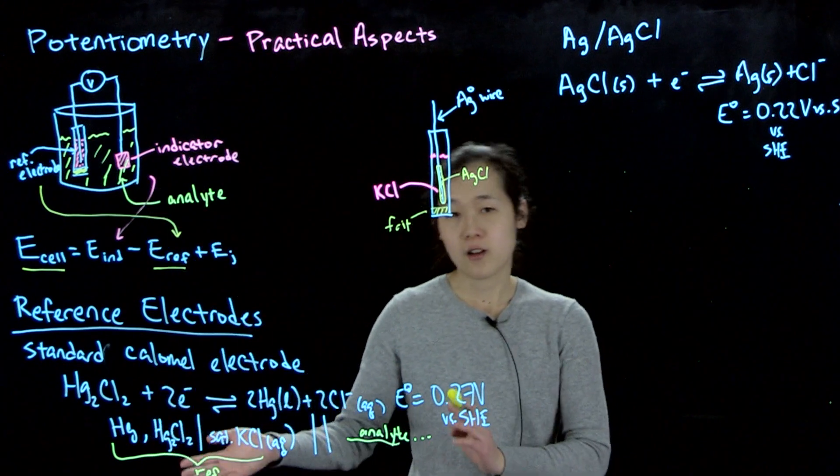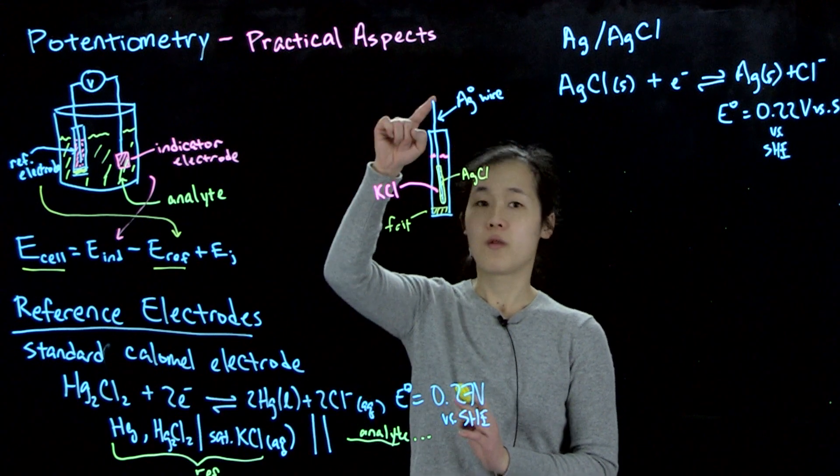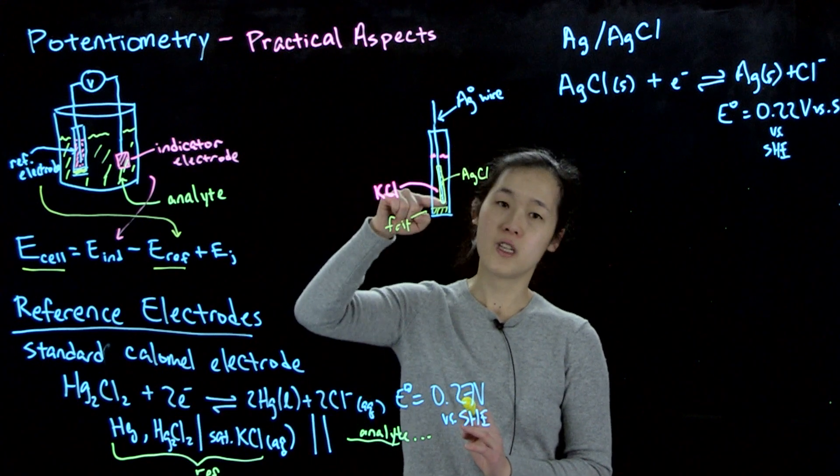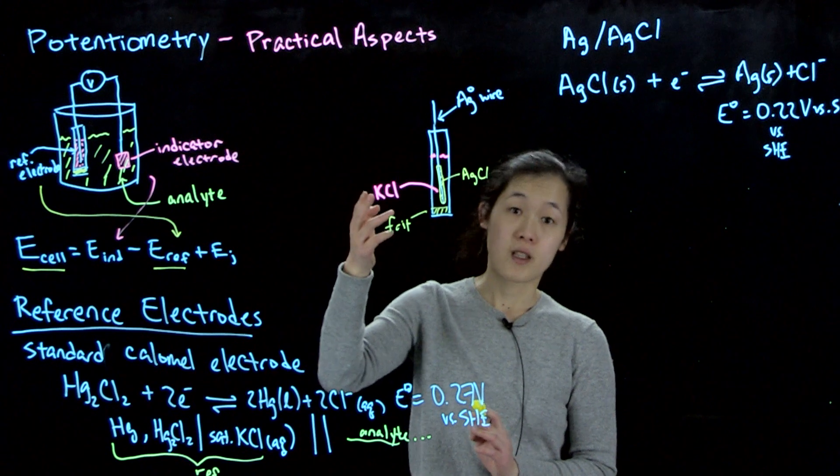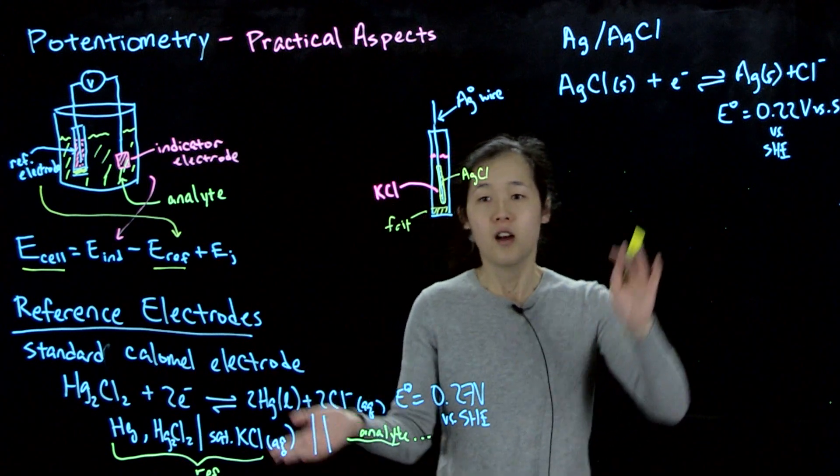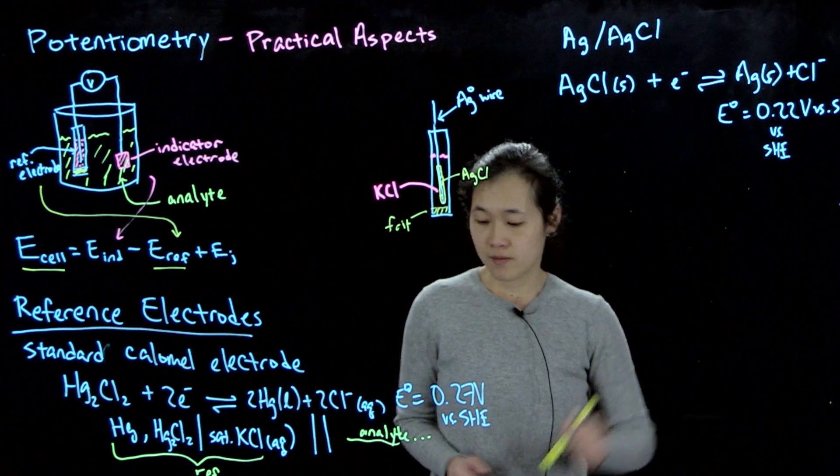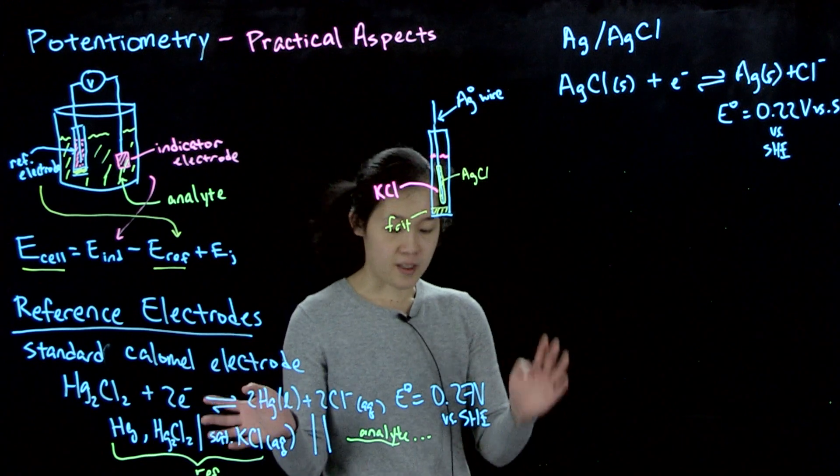So here, then we have our half reaction that we can then communicate with our indicator analyte, and then do our measurement there. So these are our reference electrodes. The standard calomel electrode is manufactured in a very similar way, where you have a mercury-mercury chloride mixture over here in potassium chloride solution, and thus we have our half reactions at known potentials. Okay, so that's our reference electrode.